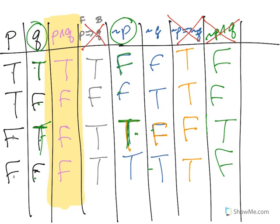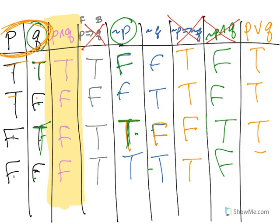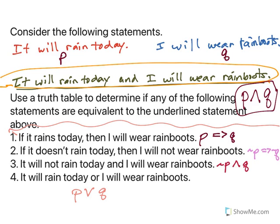And the last one is P or Q. The word 'or' means just one of them must be true. So: true-true is true; true-false is true; false-true is true; false-false is false. That gives true, true, true, false. Comparing P or Q to P and Q — those are not equivalent. So none of our four statements are equivalent to it will rain today and I will wear rain boots.